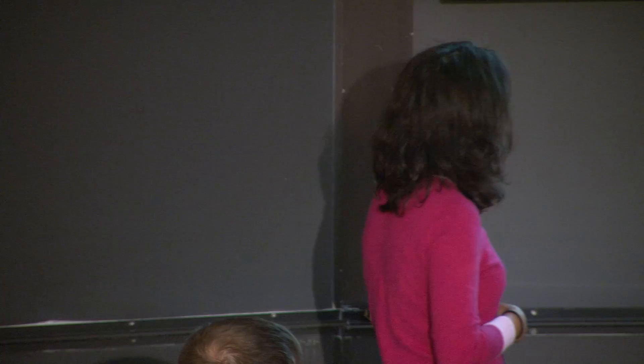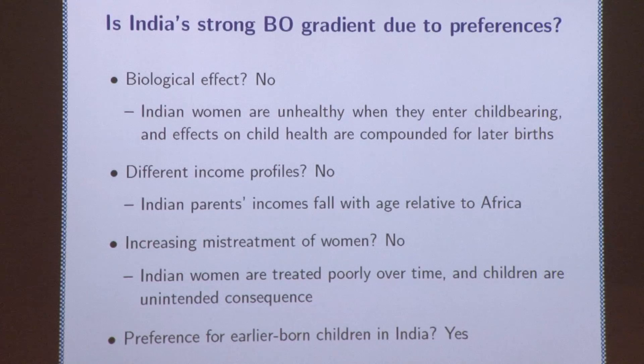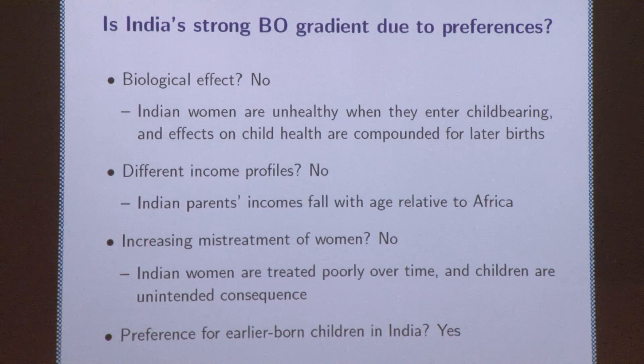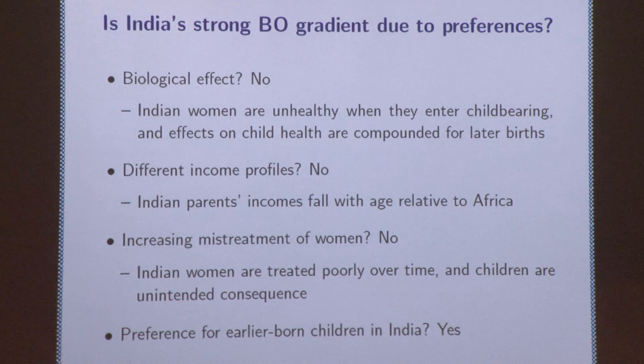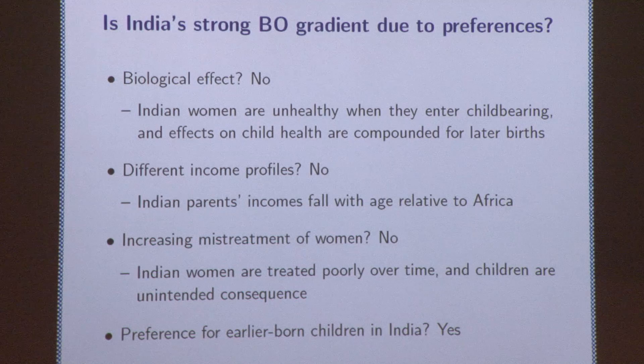We also considered whether this might be a biological effect — maybe mother's health is worse in India and successive births are more damaging when you start out in poorer health. We find that doesn't seem to be driving it. We also thought about different income profiles — maybe Indian families' income is falling over time or not increasing as fast. The strongest argument against that is this pattern is very much concentrated among women, not men. If we look at Indian men versus women, we don't see similar gradients for men with successive births. Moreover, it's concentrated among pregnant women specifically, not the general health status of women. That rules out some of the more general explanations.